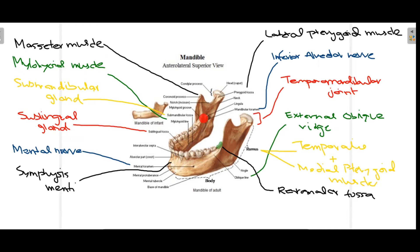Moving downwards, we have a structure known as the lingula, where the sphenomandibular ligament is attached. Just behind the lingula is a circular opening — the mandibular foramen — through which the inferior alveolar nerve passes inside the mandible. We can also see the ramus, the angle, and the body of the mandible in this view.